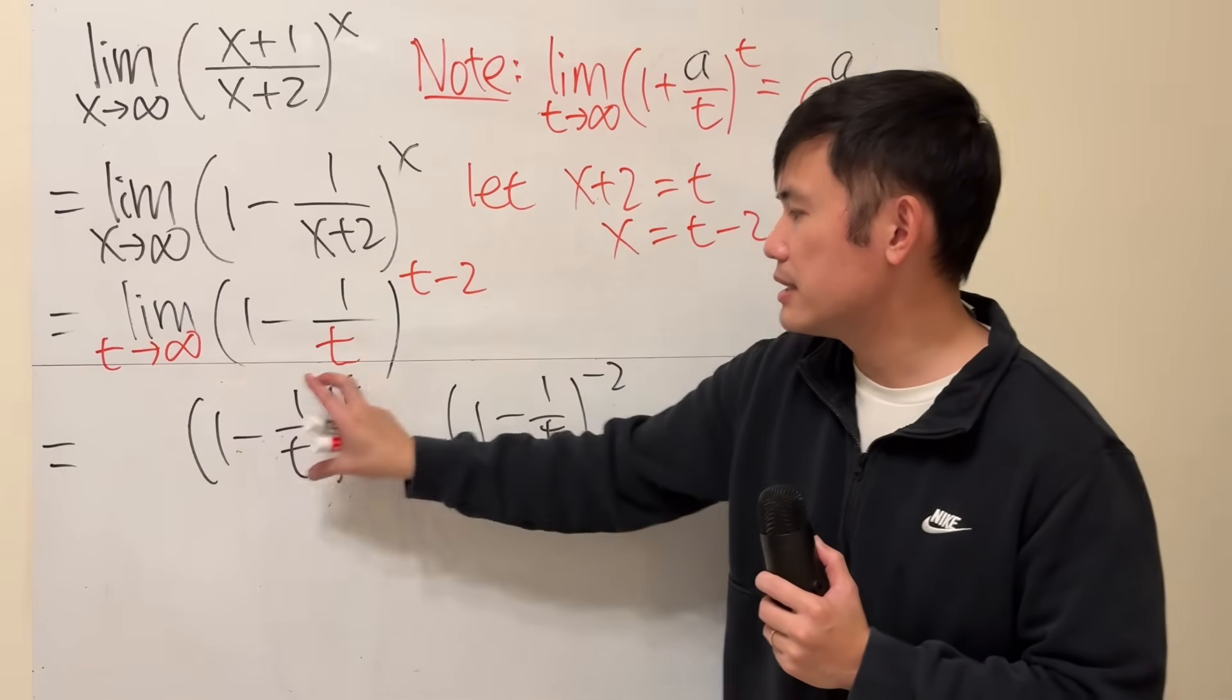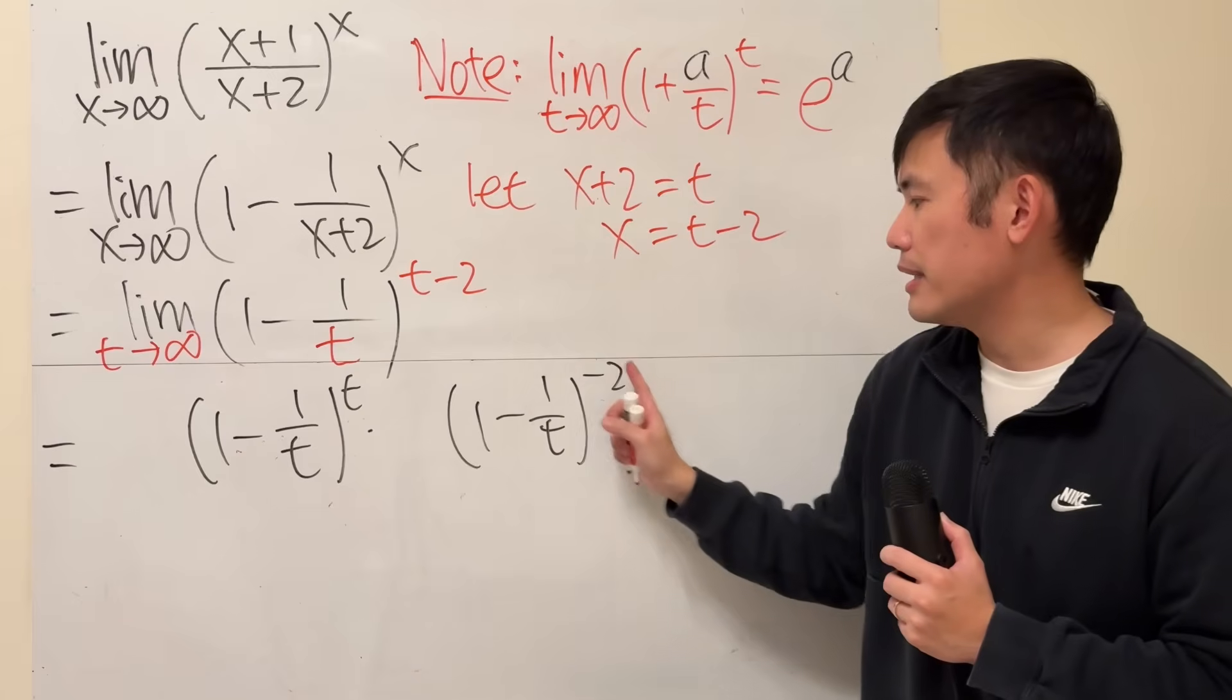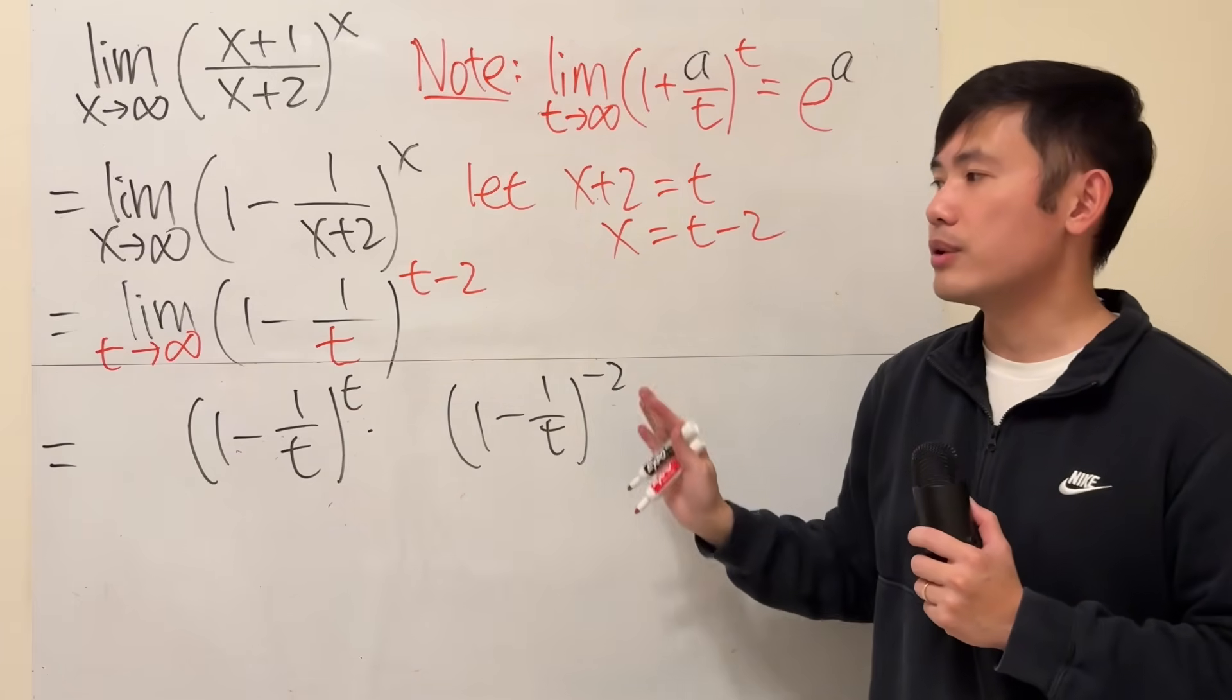But raise that to the negative 2. So, this thing, it's the same as this time step because we can just combine the exponent, right? t plus negative 2, we get that. So, good.